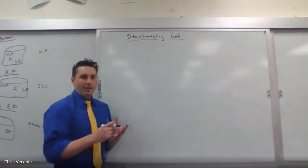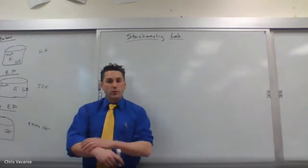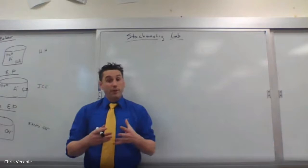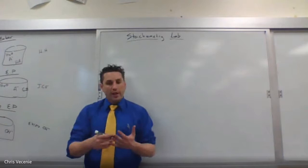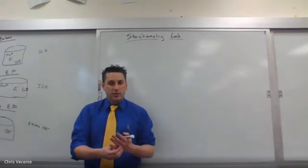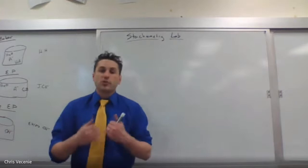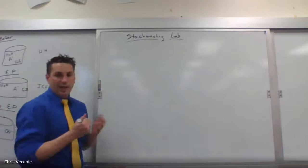Good morning everybody. Today we're heading into the lab. We've been talking about stoichiometry for the last few days, and the two types of calculations we've done are regular stoichiometry — where we start with some amount of a substance and convert it into a new substance — and percent yield, which tells us how much we really got versus what we were supposed to get. This lab incorporates both.